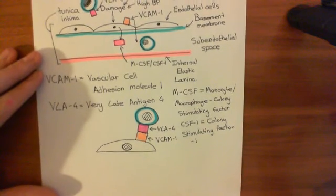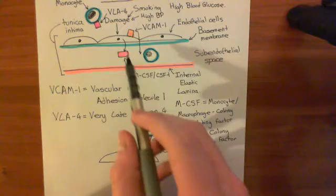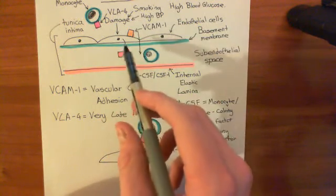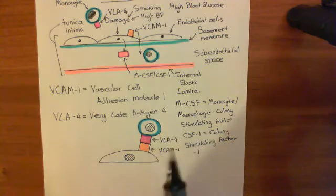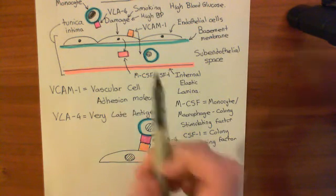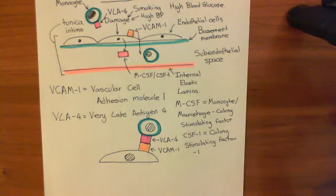Right, now what does this do? Well, one thing is it's not just going to go into the subendothelial space. It's also going to be released into the bloodstream. And what it will do is it will go to the bone marrow, to the cells in the bone marrow which produce monocytes and cause them to produce more monocytes, basically. So it's activating the production of monocytes.